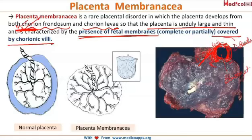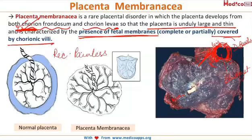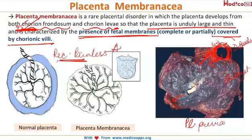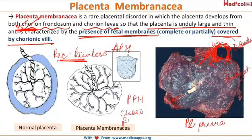In placenta membranacea, the characteristic clinical manifestation is recurrent painless vaginal bleeding during pregnancy. Since the placenta is very large, some parts may encroach into the lower segment resulting in placenta previa and APH. Complications include PPH due to imperfect placental separation, increased risk of chorioamnionitis, fetal growth restriction, preterm birth, and even stillbirth.